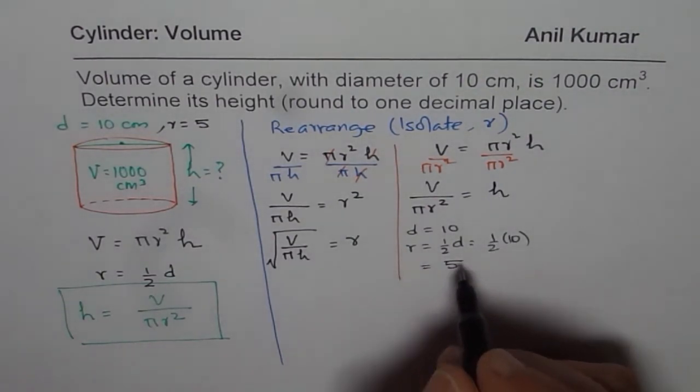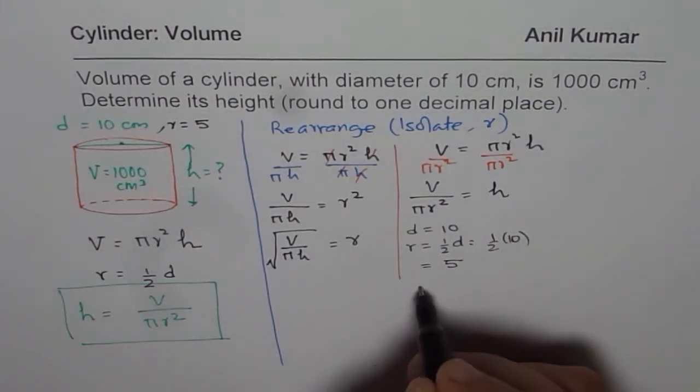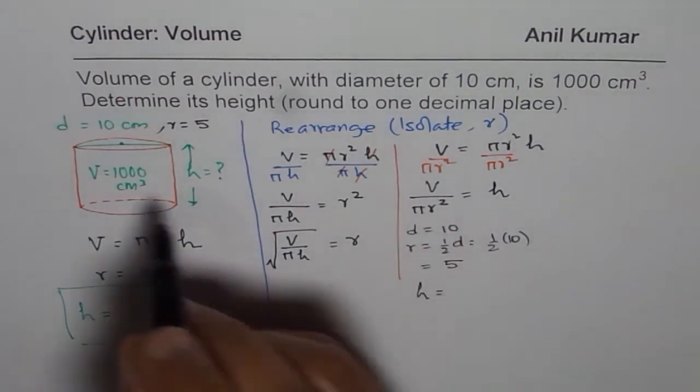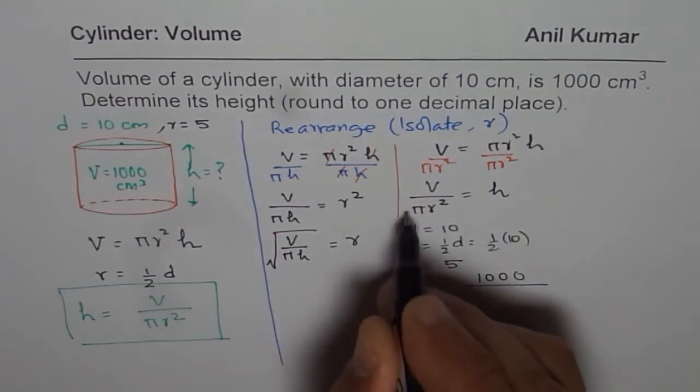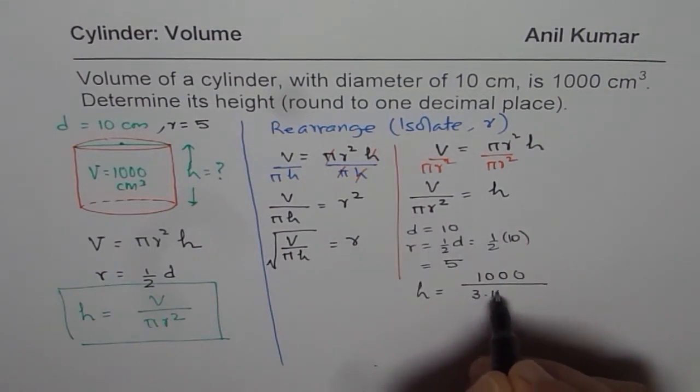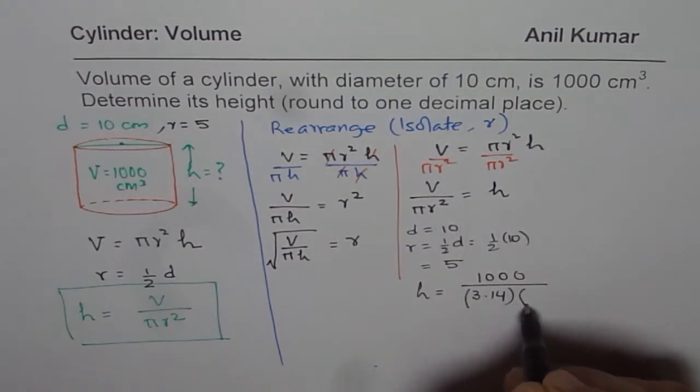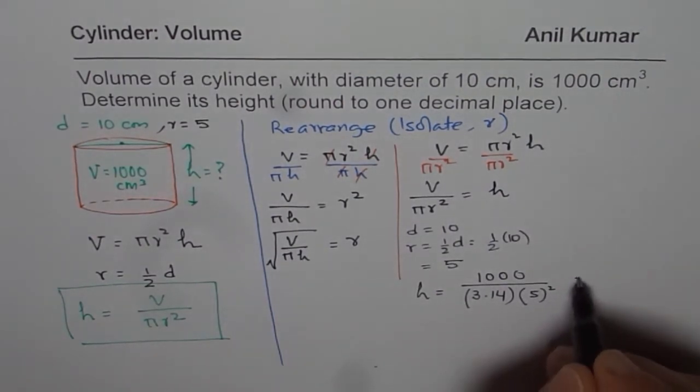Half of 10 is 5. So we know radius is 5. Now since radius is 5, what should be the height? So we can say now that h = 1000/(π × 5²), which is 1000/(3.14 × 5²).